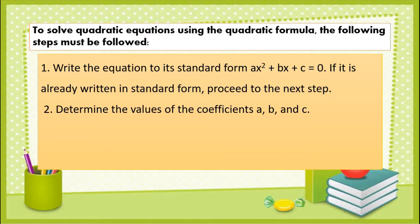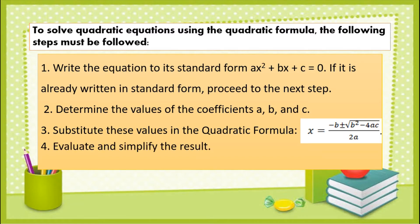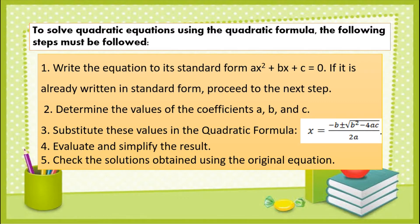Step 2: determine the values of the coefficients a, b, and c. Step 3: substitute these values in the quadratic formula — x equals negative b plus or minus the square root of b squared minus 4ac, divided by 2a. Step 4: evaluate and simplify the result. And for the last step, check the solutions obtained using the original equation.